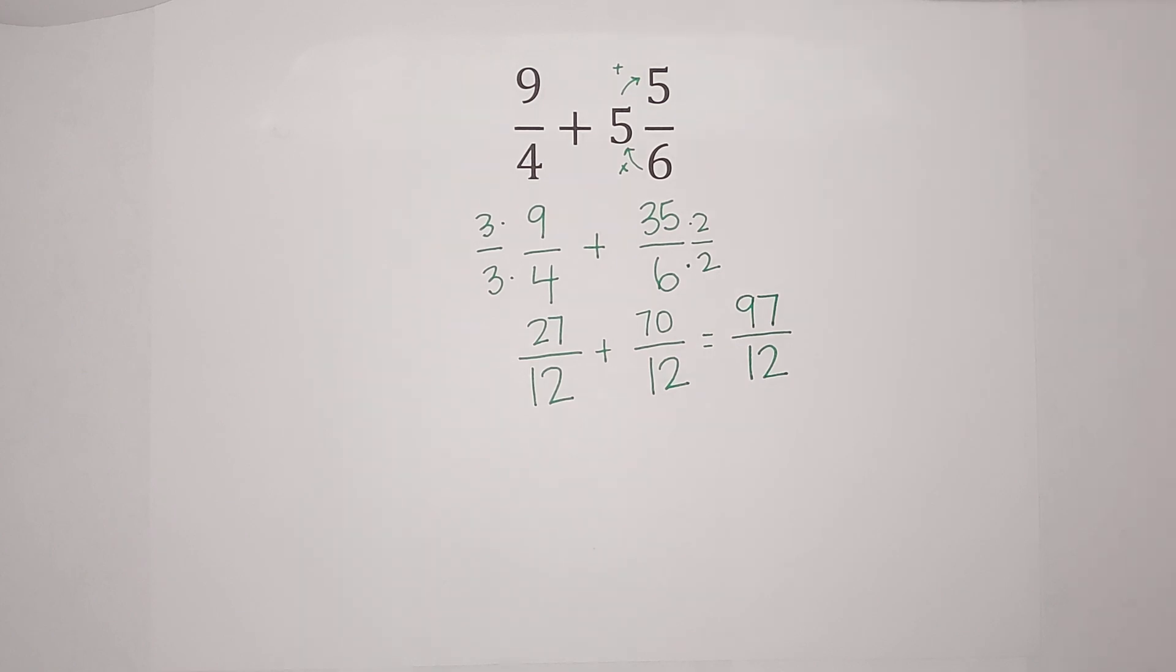A lot of times we like to turn it back into a mixed number because 97 twelfths doesn't mean much to me. I can't really picture that. But if I can get it back to a mixed number, it can be a lot easier to kind of picture.